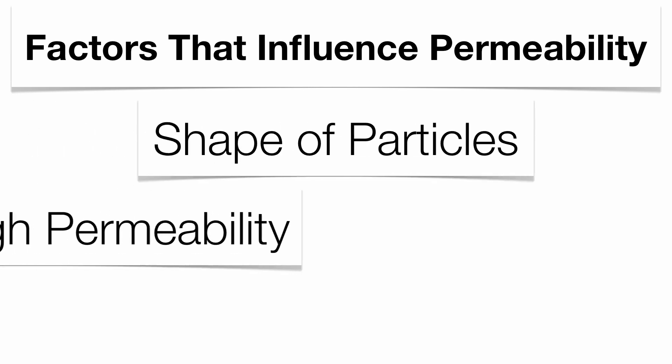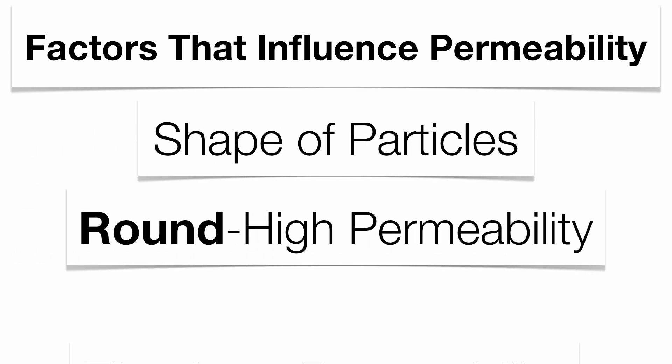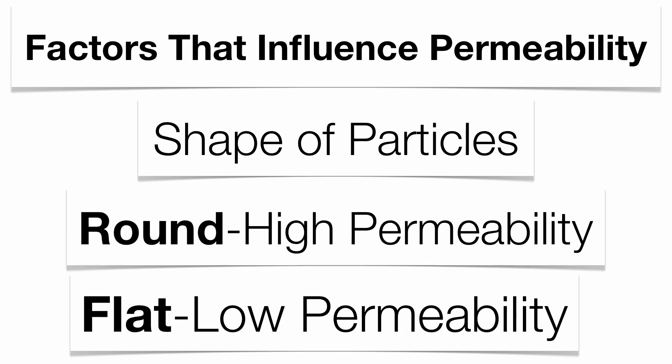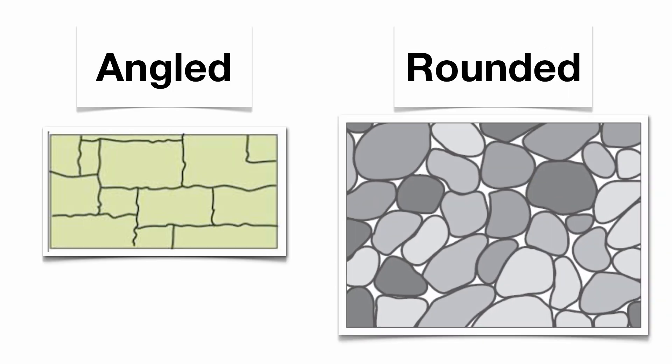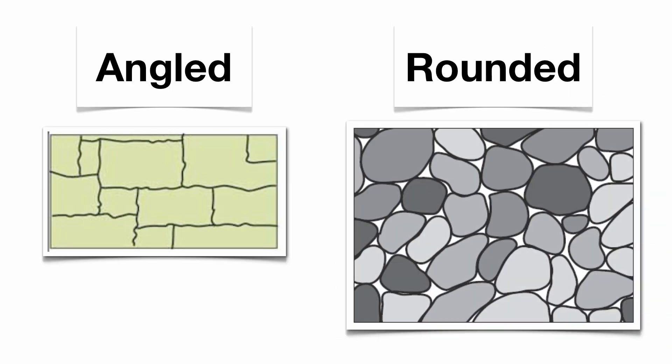The shape of the particles — round versus flat — is going to affect your permeability. Rounder fragments compared to angled fragments have a much higher permeability because they have bigger pore spaces. Angled fragments have much lower pore space and much lower permeability.